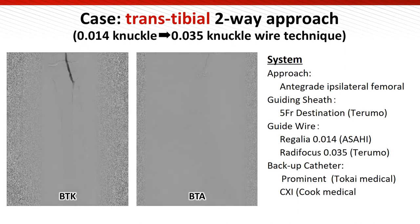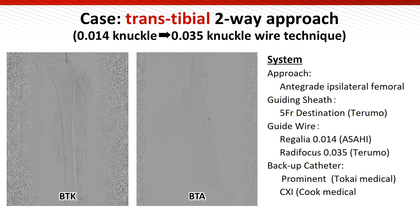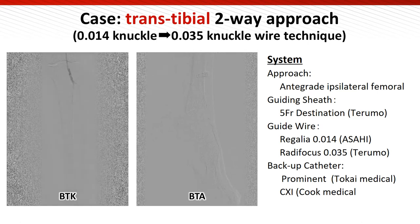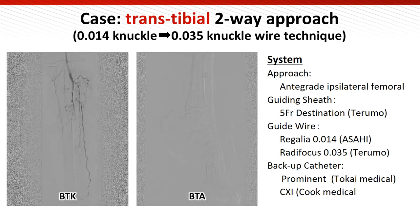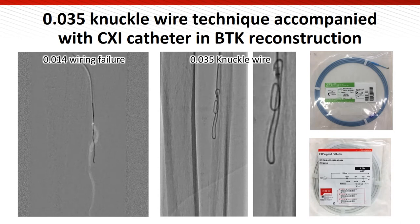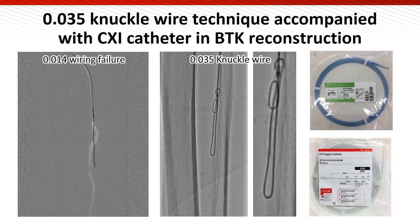This is another representative case treated with the NAKU wire technique. The target lesion was an 8-year-long CTO with severe calcification. A 5-French long sheath was placed at the popliteal artery, and the 0.014 Regalia wire was first used for wire crossing. Unfortunately, due to the severe bilateral calcification at the CTO site, the 0.014 wire could not advance through the lesion.